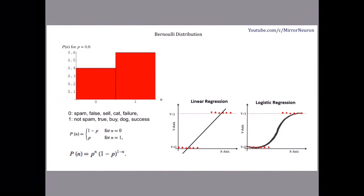Let's begin with the Bernoulli distribution. Bernoulli distribution deals with an output variable that can take two values — either zero or one. It gives you the discrete probability: what is the probability of getting a zero versus a one? This is very similar to the problem we are currently trying to solve using logistic regression — a binary classification where we have only two types of output values: zero and one.